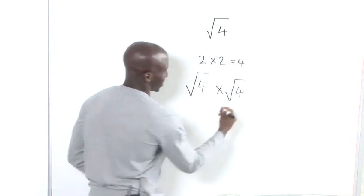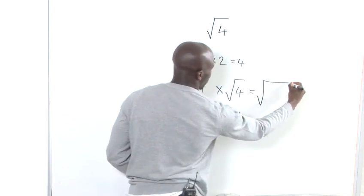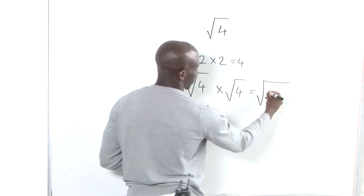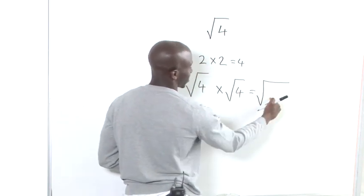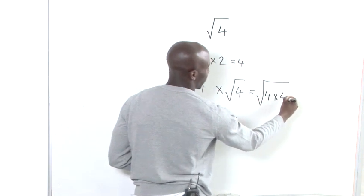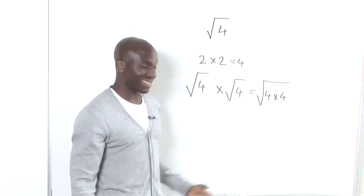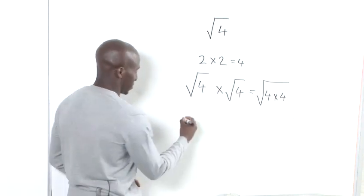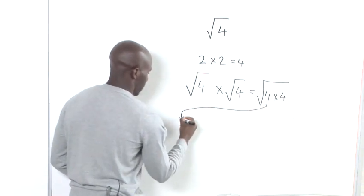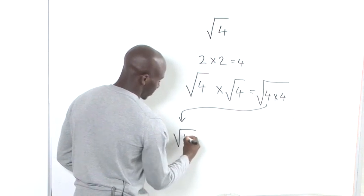And we can do that by saying the square root goes over both numbers now. So, we take off one of the square roots and we put both numbers inside the square root. So, we've got 4 times 4. Now, 4 times 4 is 16. So, we bring this all the way down here and we have square root of 16.